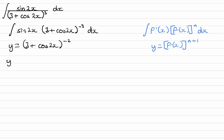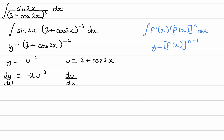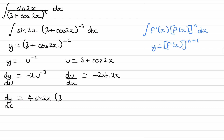We then differentiate this using the chain rule. Let u equal 3 plus cos 2x, so y becomes u to the power of minus 2. Differentiating: dy/du is minus 2u to the minus 3, and du/dx is minus 2 sine 2x. Multiplying these together, the minus 2 and minus 2 combine to make 4, giving us 4 sine 2x times (3 plus cos 2x) to the power of minus 3.